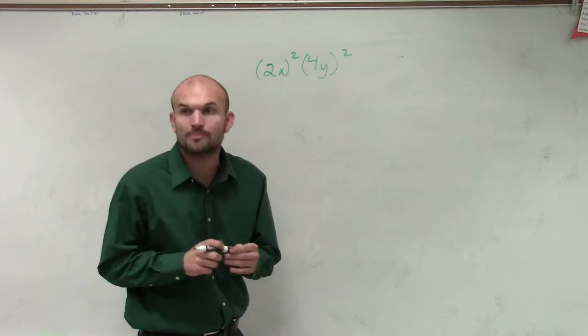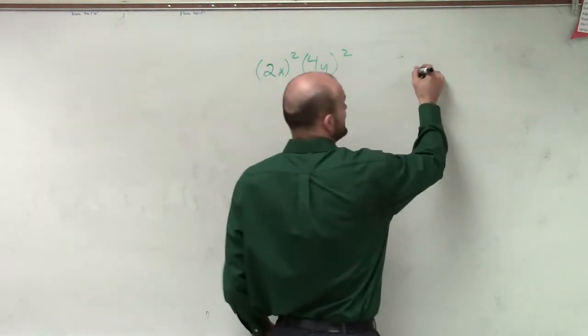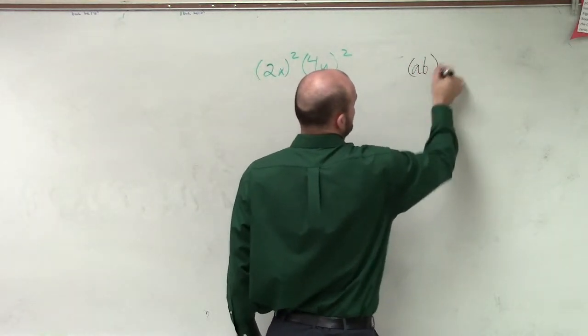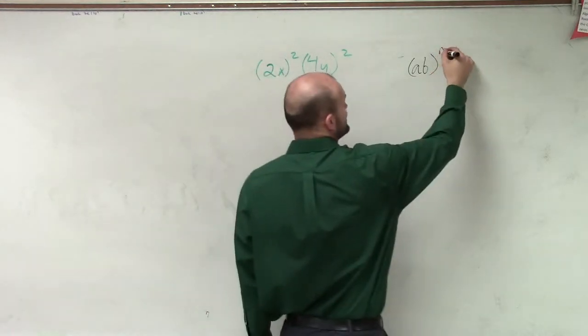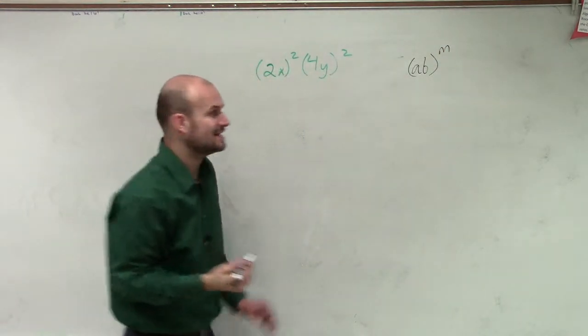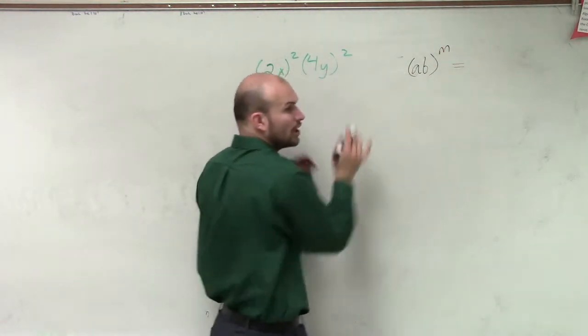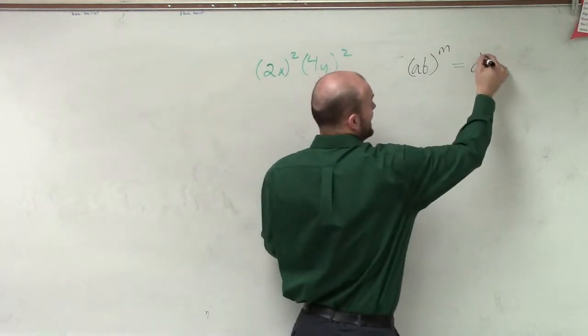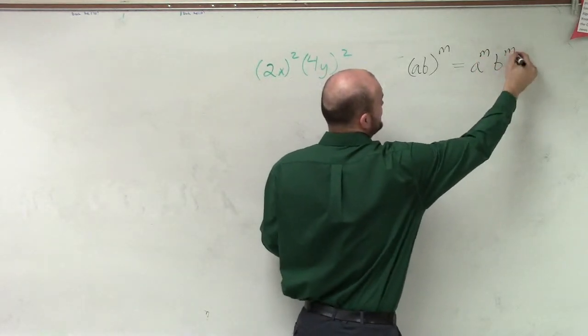The first property of exponents is called the power of product. And what that states is, if I have the product of two terms raised to an exponent, what that is equal to is each term raised to an exponent. So that's going to be a to the m times b to the m.